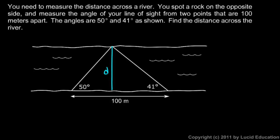We're told that we spot a rock on the opposite shore. That's at this point right here. And we measure the angle that our line of sight makes from two points that are 100 meters apart. So it's 100 meters from this point here on the left to this one here on the right.